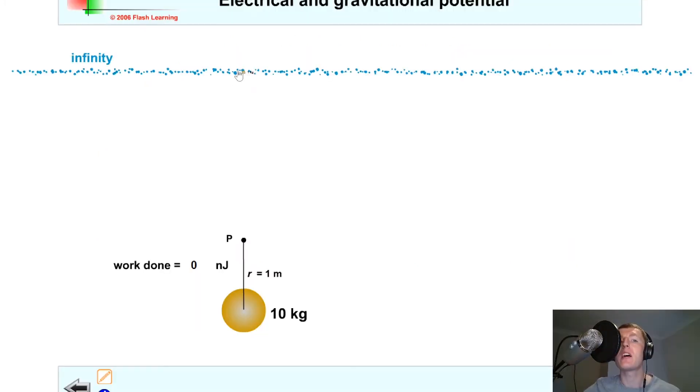So imagine we've got a one kilogram mass at infinity, that is the theoretical zero of gravitational potential. So right now gravitational potential will be zero joules per kilogram because the mass is at a distance of infinity away from this mass of 10 kilograms. And when we're at infinity, notice that the work done on this mass is a value of zero nanojoules.